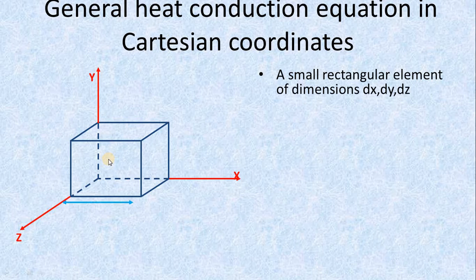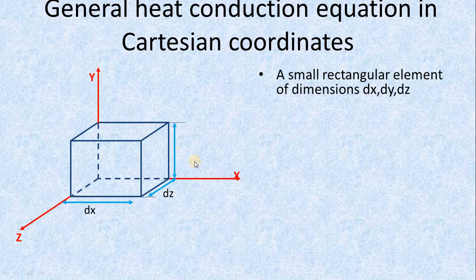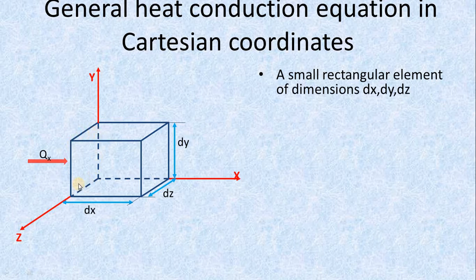The dimensions are dx in the direction of x, dz in the direction of z, and dy in the direction of y. Now, if Qx is the heat influx — meaning heat entering this rectangular block, we call it influx. Whatever heat exits from this element, we call it heat efflux.